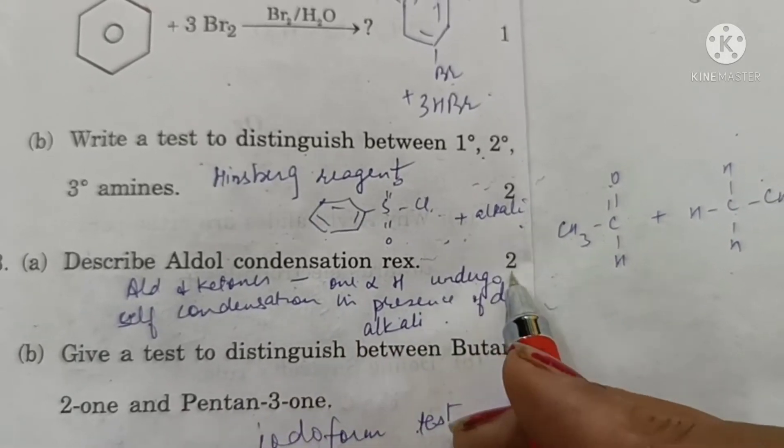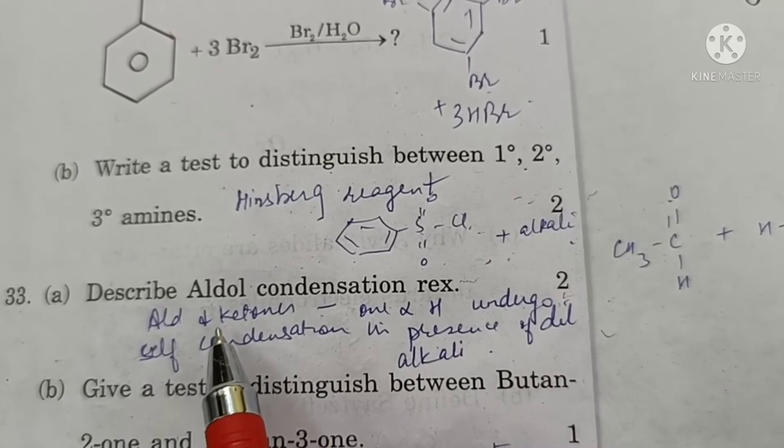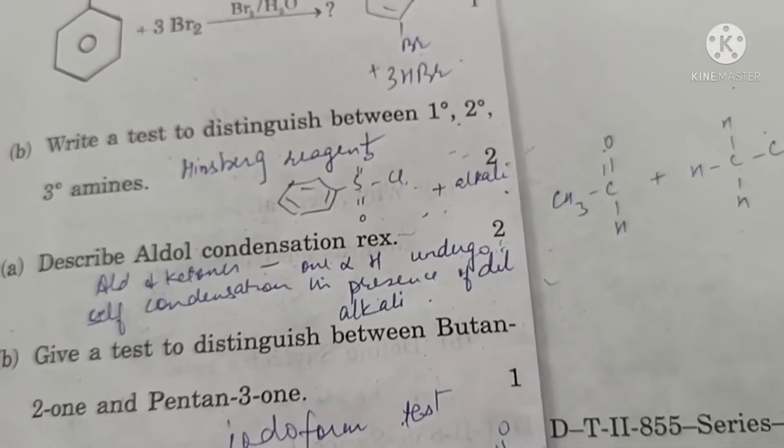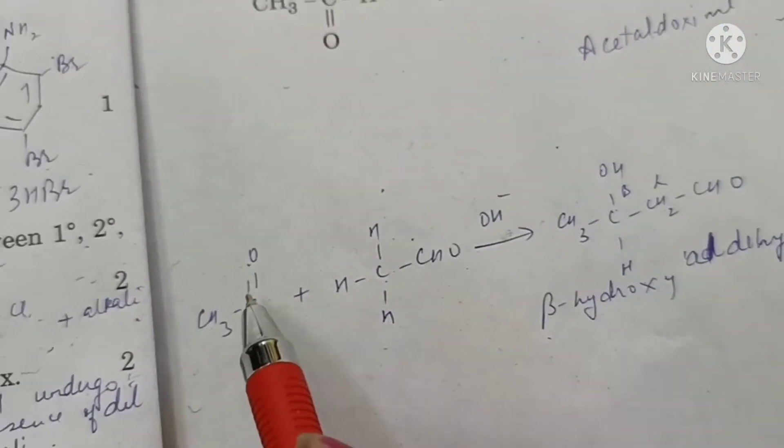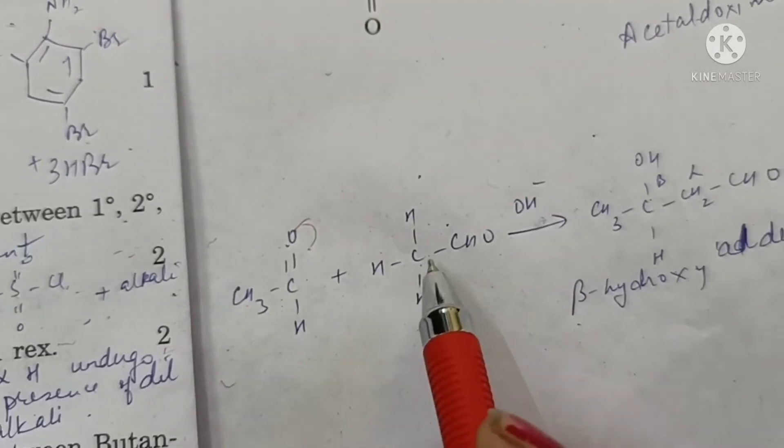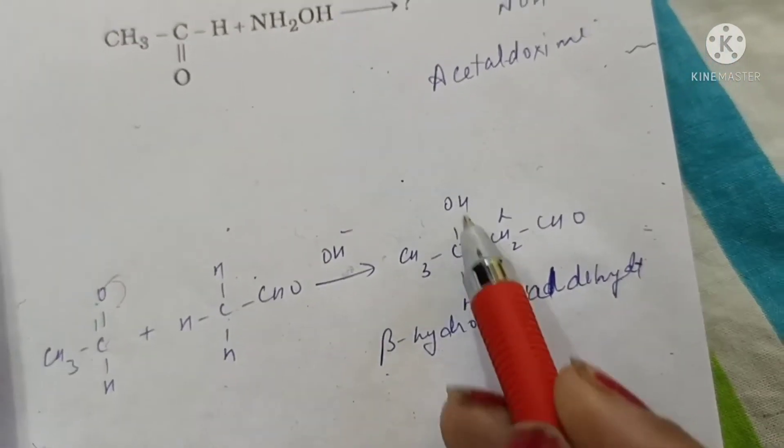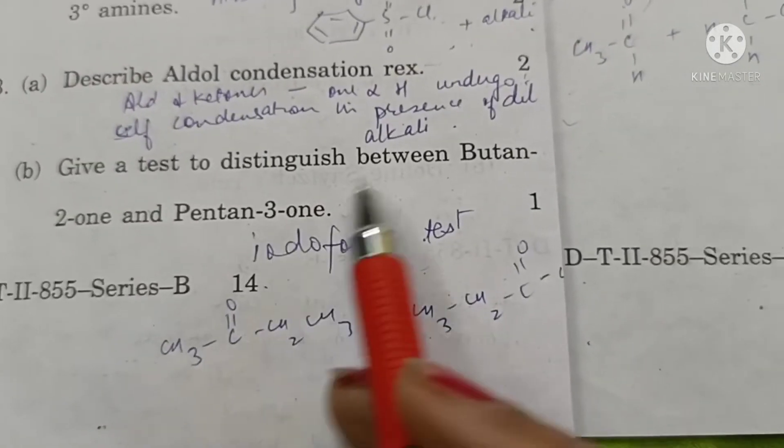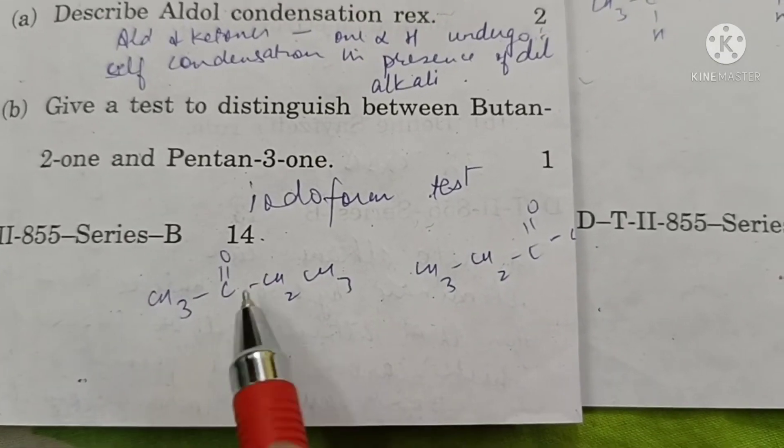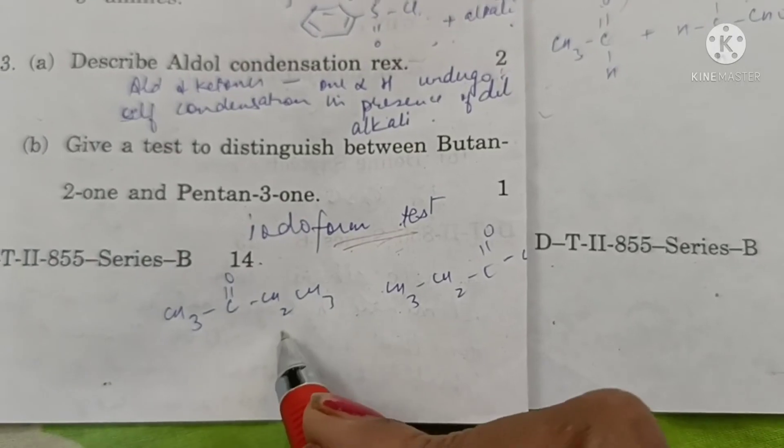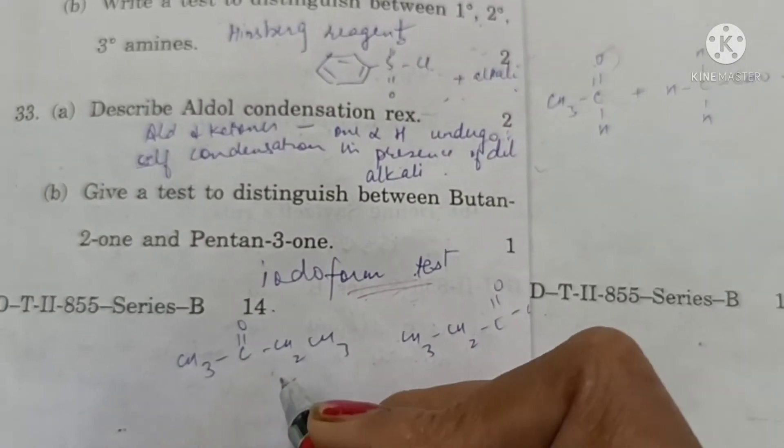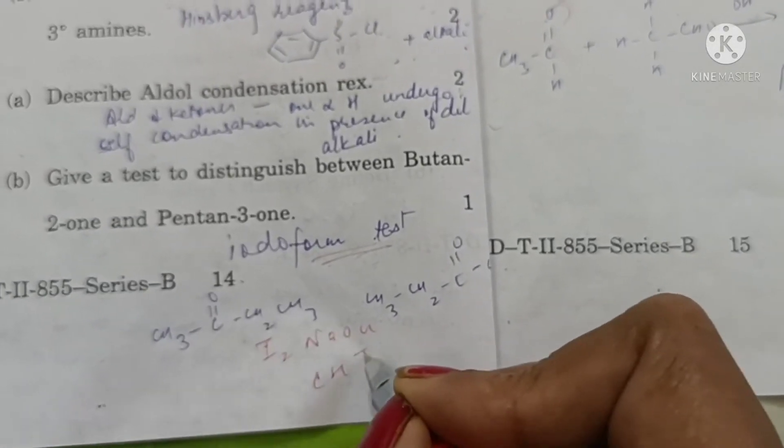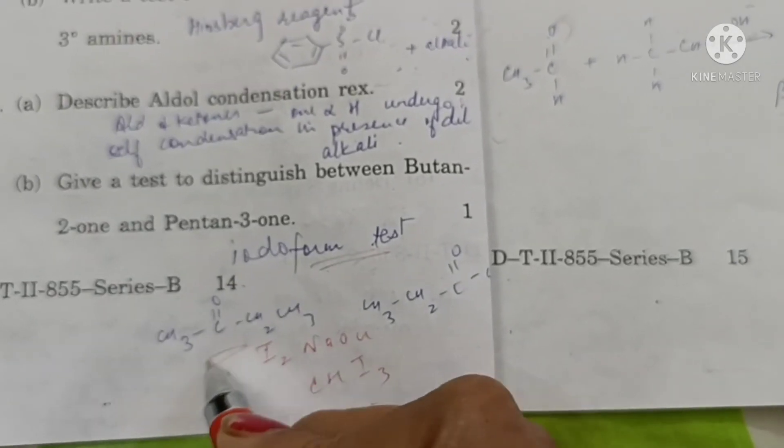Describe aldol condensation reaction. Aldehydes and ketones having one alpha hydrogen undergo self condensation in presence of dilute alkali. These electrons move here, H comes here and this gets attached to carbon to form beta hydroxy aldehyde. This reaction is known as aldol condensation reaction. A test to distinguish between butane-2-one: iodoform test because this is a methyl ketone.